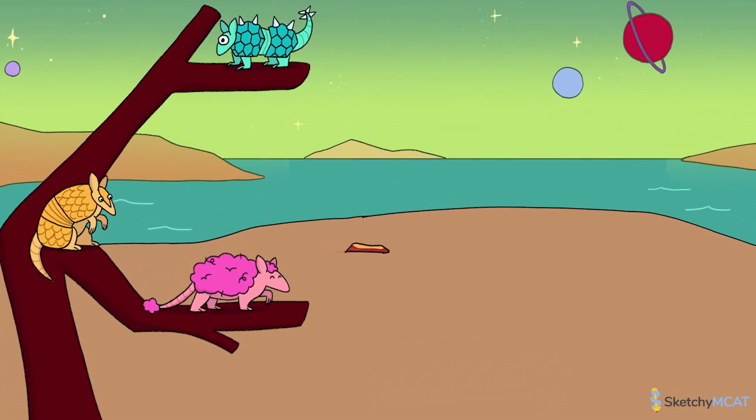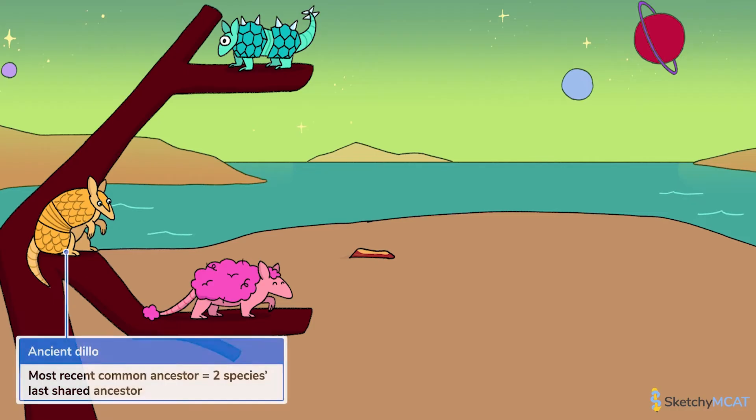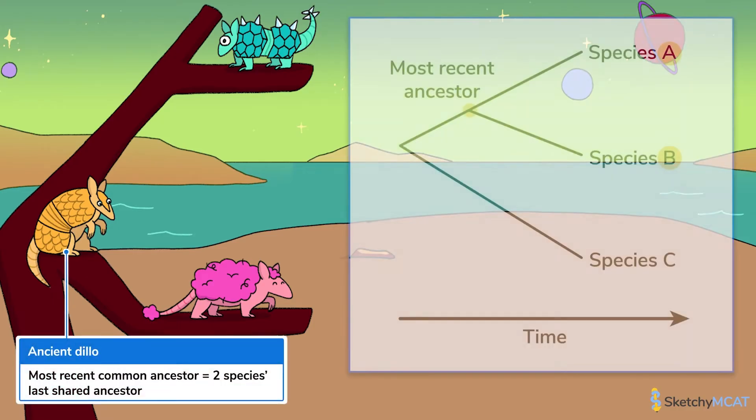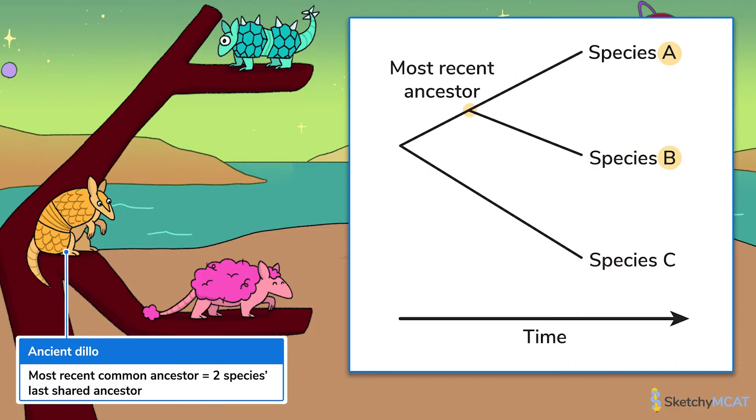This point in the past where two species shared a lineage is called their most recent common ancestor. Of course, all life emerged from one common ancestor billions of years ago, so any two species have a common ancestor at some point in history. But in general, more closely related species will share a more recent common ancestor.